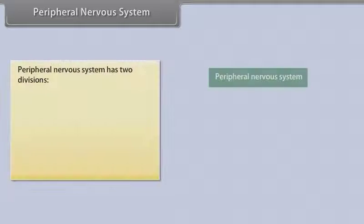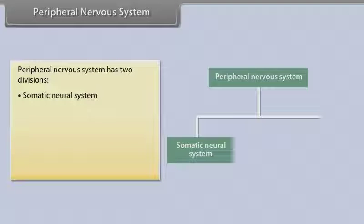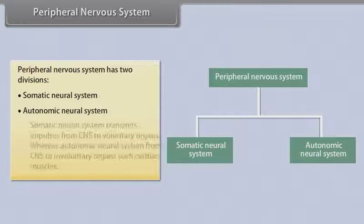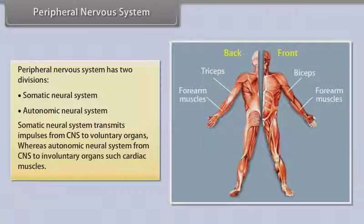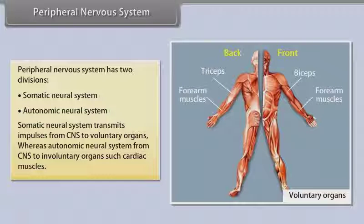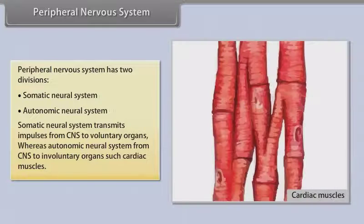Peripheral nervous system has two divisions: somatic neural system and autonomic neural system. Somatic neural system transmits impulses from CNS to voluntary organs, whereas autonomic neural system transmits from CNS to involuntary organs such as cardiac muscles.